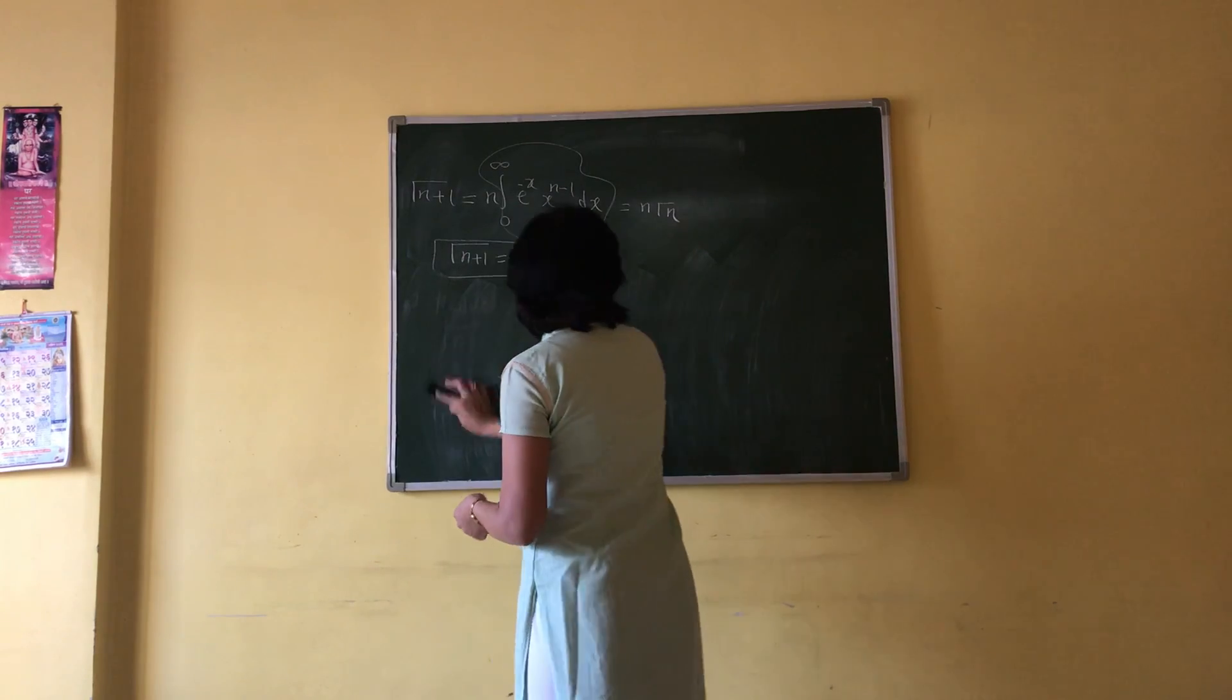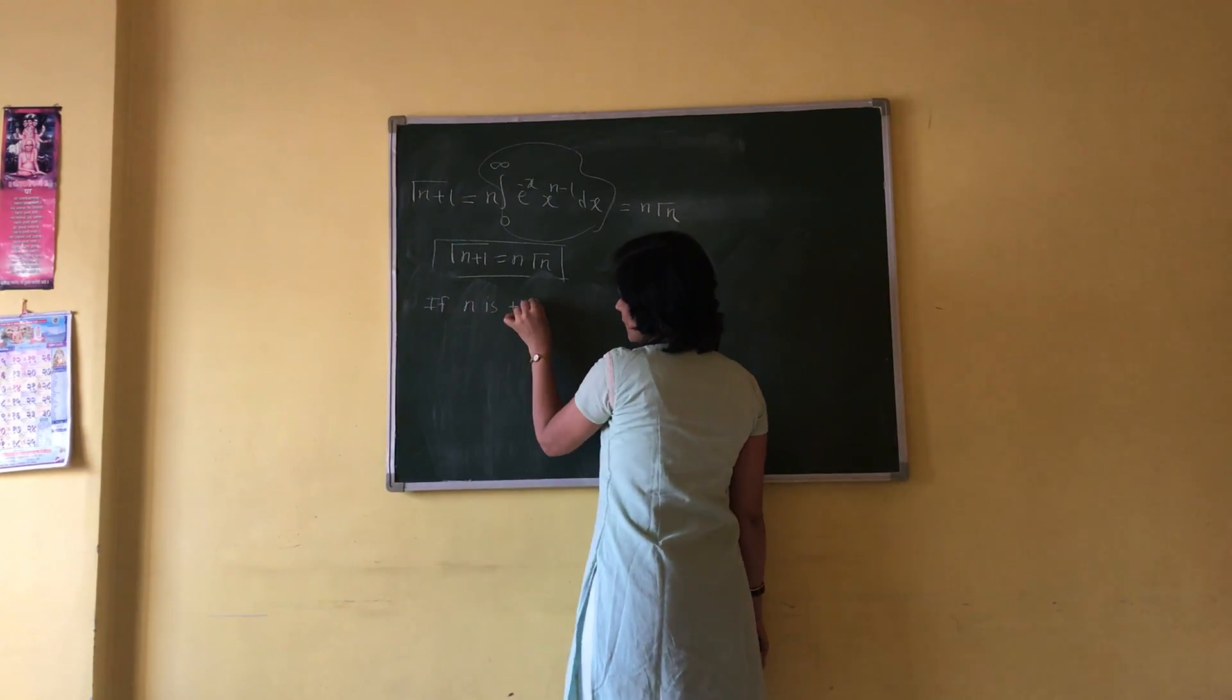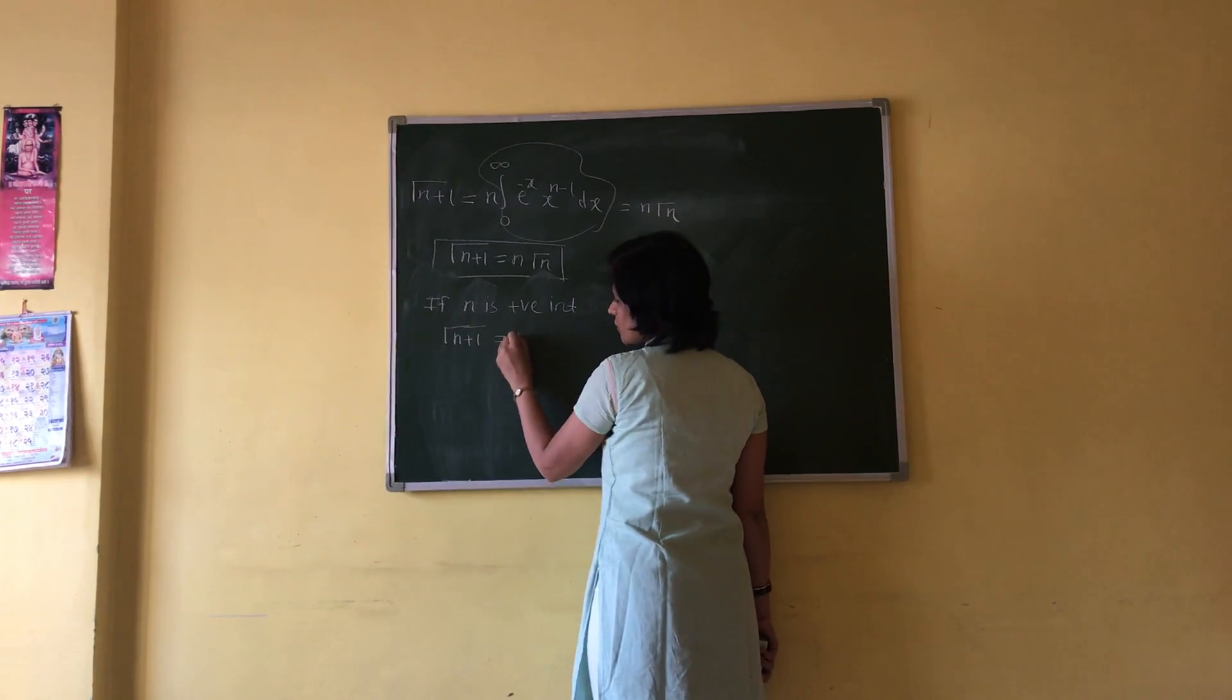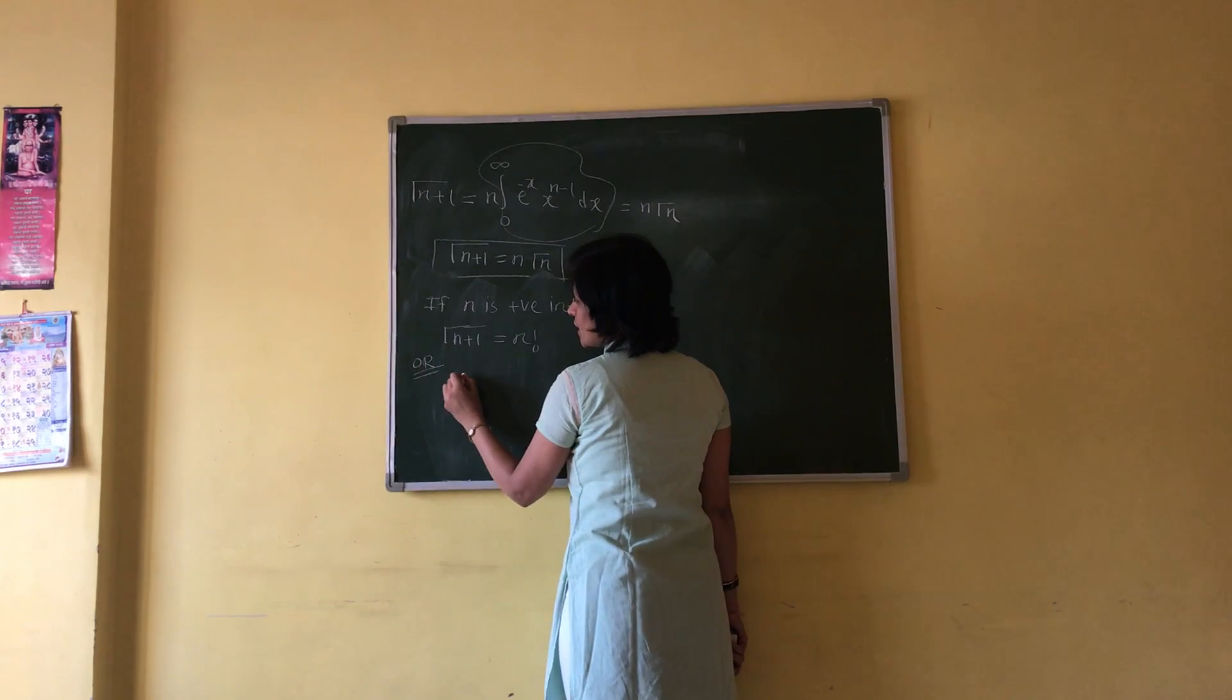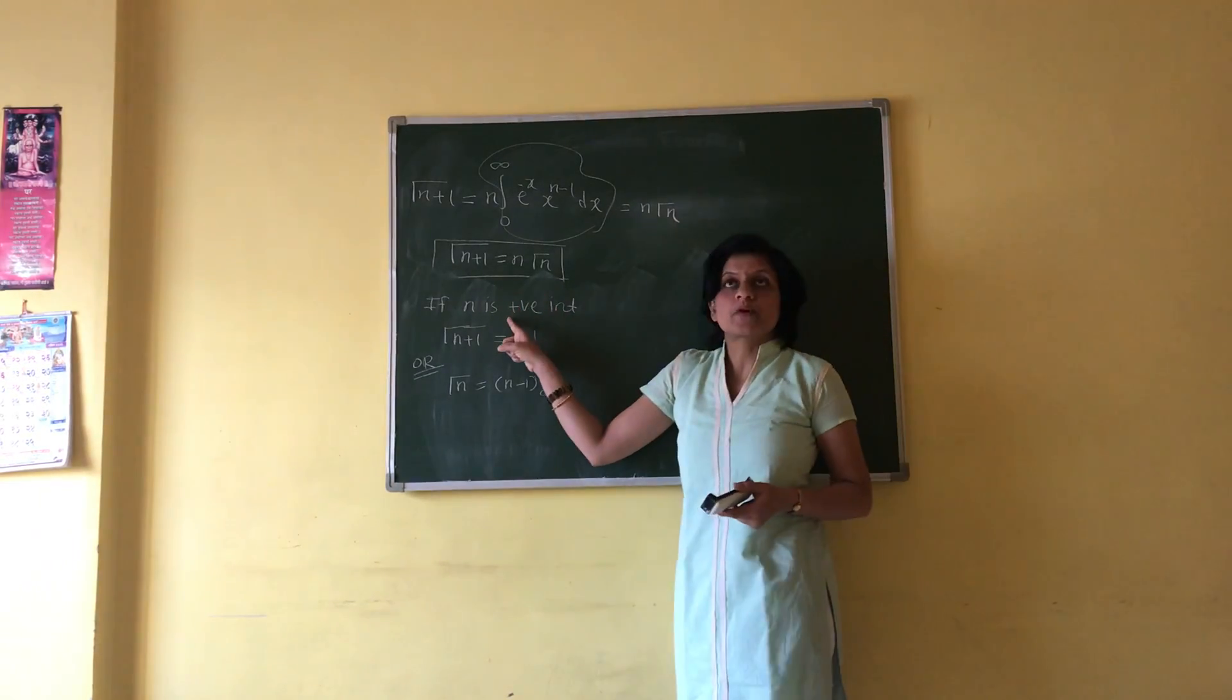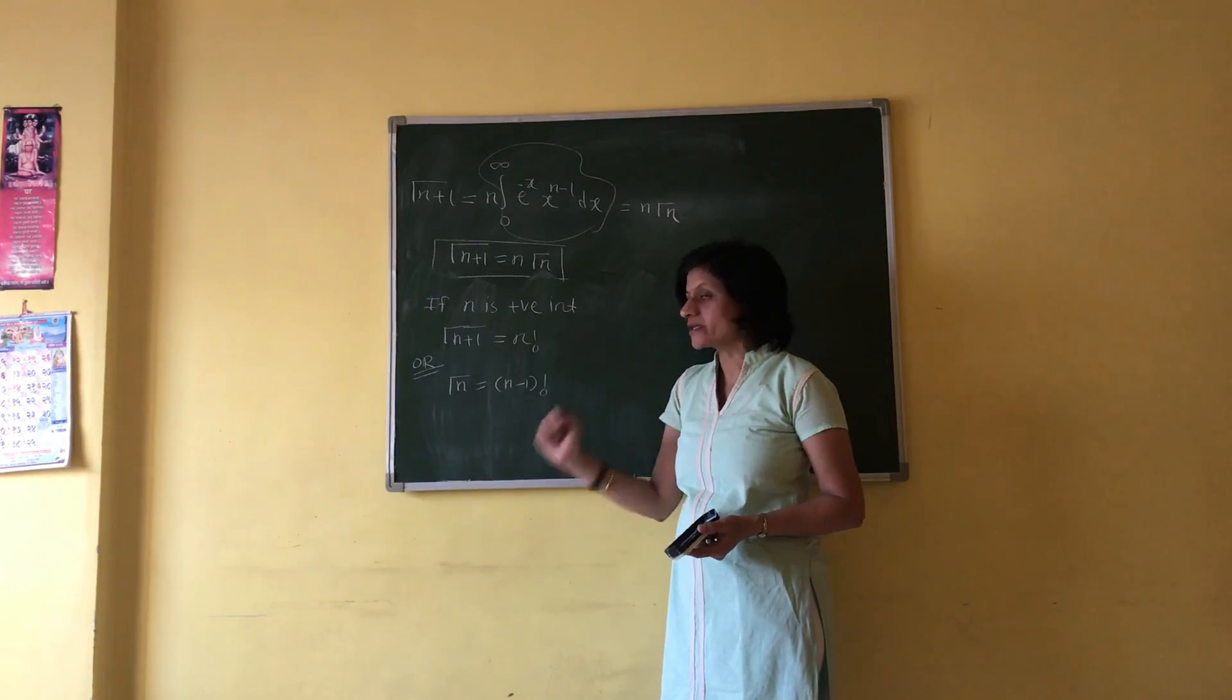And if n is a positive integer, gamma n plus 1 equals n factorial, and gamma n equals n minus 1 factorial. Remember these two results. If n is a positive integer, gamma of n plus 1 is n factorial, or applying the second result, gamma n equals n minus 1 factorial.